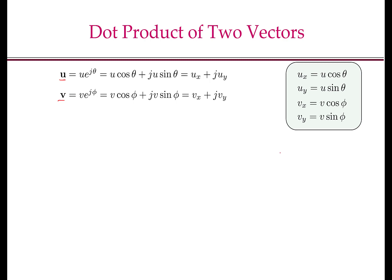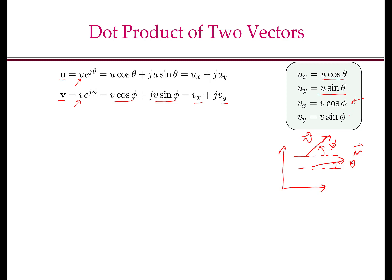Let u and v be two vectors in our global reference frame. The magnitude of the vector u is given by small u, and the magnitude of vector v is given by small v. The angle that vector u makes with the x-axis is theta, and the angle that vector v makes is phi. So the vector u can be written as u·e^(jθ), or u·cos(θ) + j·u·sin(θ), which is the same as ux + j·uy, where ux = u·cos(θ) and uy = u·sin(θ). Similarly, vector v can be written as v·e^(jφ) = v·cos(φ) + j·v·sin(φ) = vx + j·vy.